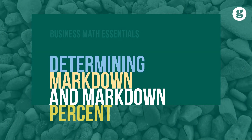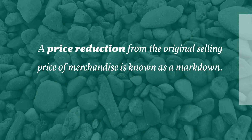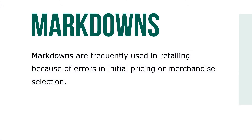The original selling price of merchandise usually represents only a temporary situation based on customer and competitor reaction to that price. A price reduction from the original selling price of merchandise is known as a markdown. Markdowns are frequently used in retailing because of errors in initial pricing or merchandise selection.